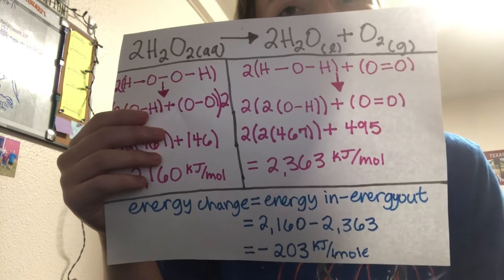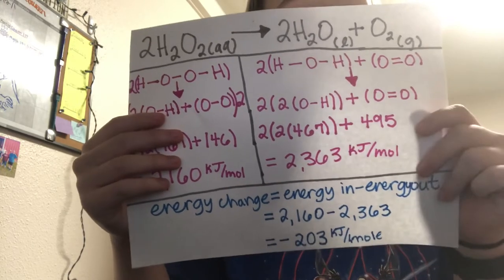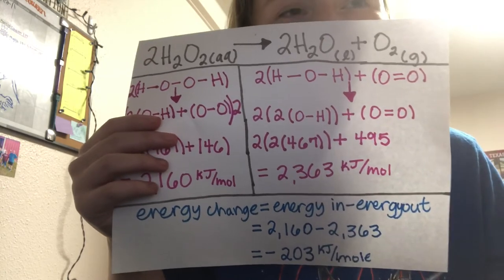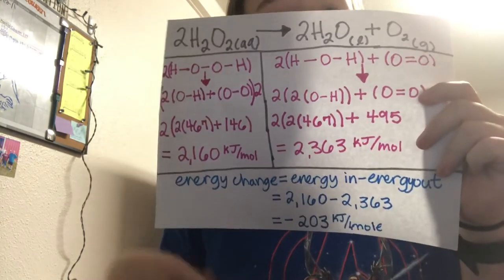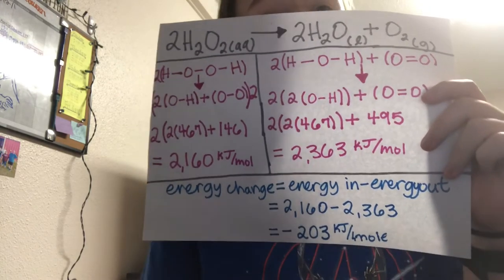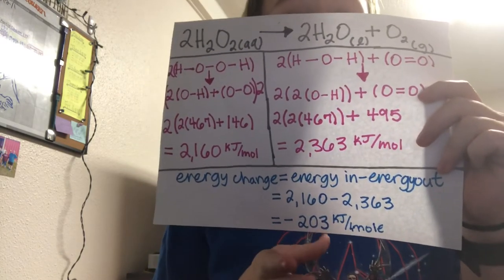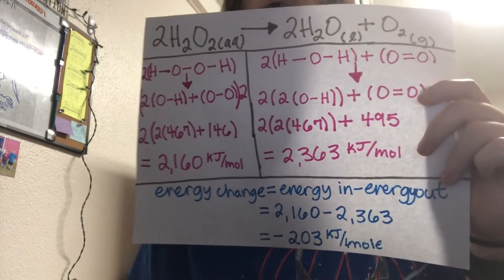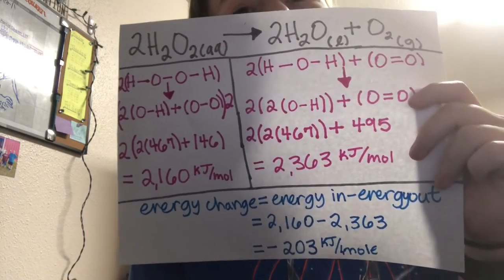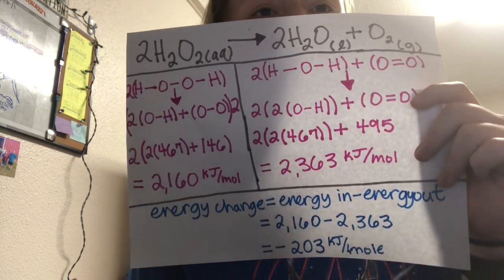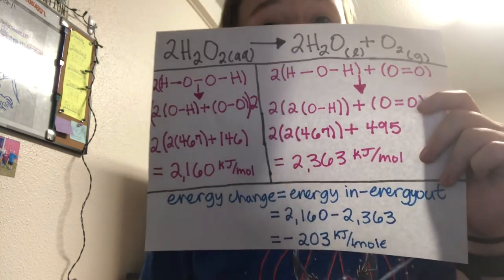To find the energy change, we take the total energy of the reactants minus the total energy of the products. The reactant side has a total energy of 2160, and the product side has a total of 2363. So the energy change is 2160 minus 2363, which equals negative 203. This is the enthalpy change, and since it's negative, the reaction to make elephant toothpaste is considered an exothermic reaction.